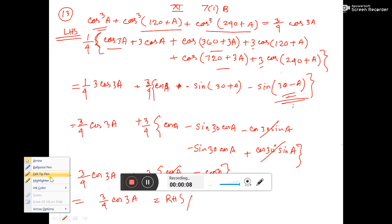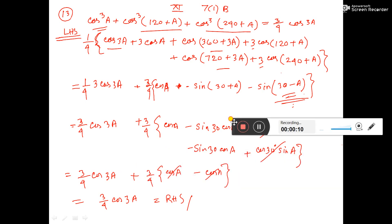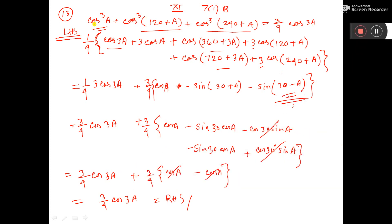This is the 13th number. Here, I took 1 by 4 common. That means here will be 4 cos cube A — here will be 4 cos cube this, 4 cos cube this. Now, there is one formula: cos 3 theta is equal to 4 cos cube theta minus 3 cos theta.